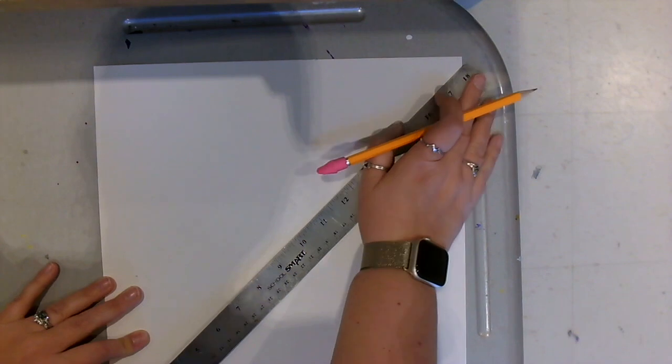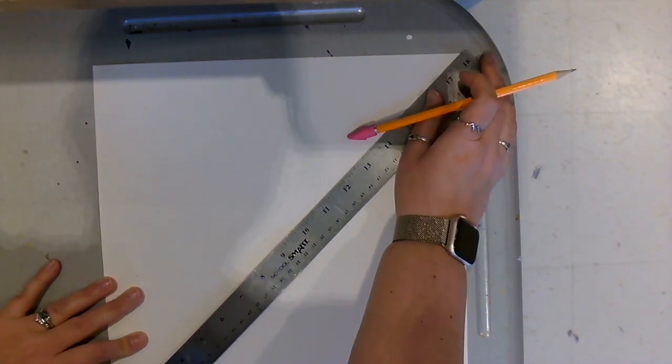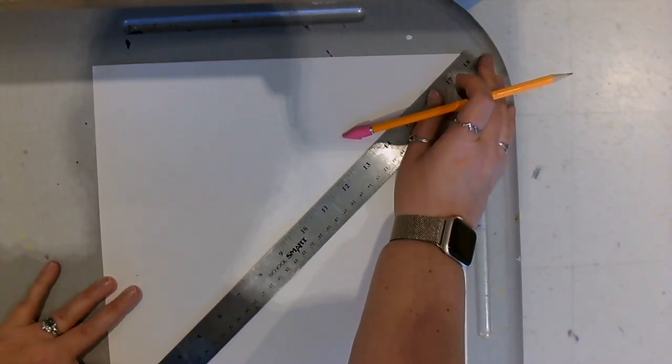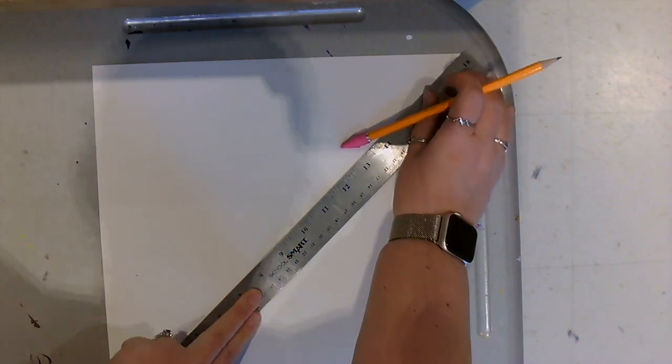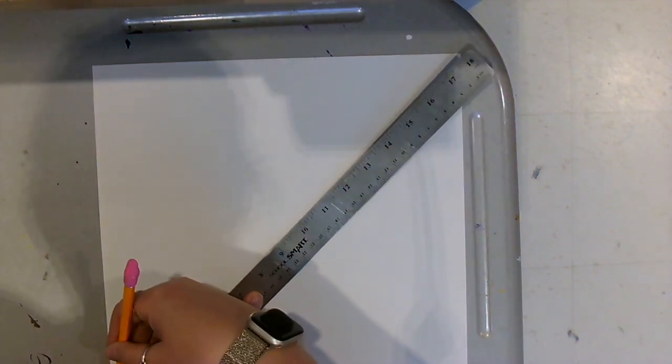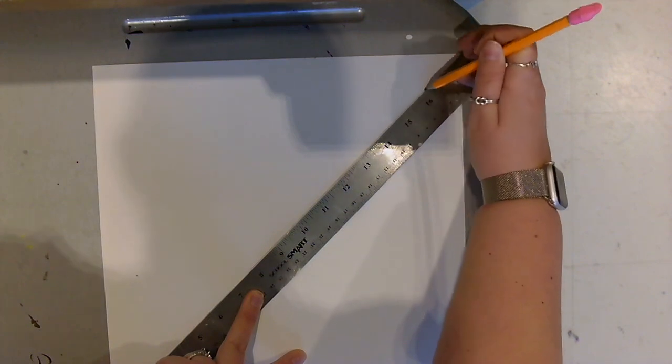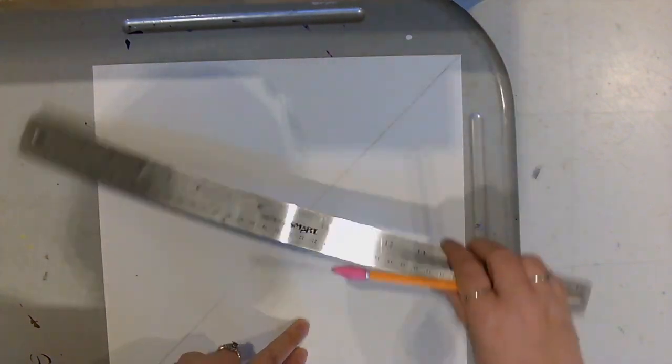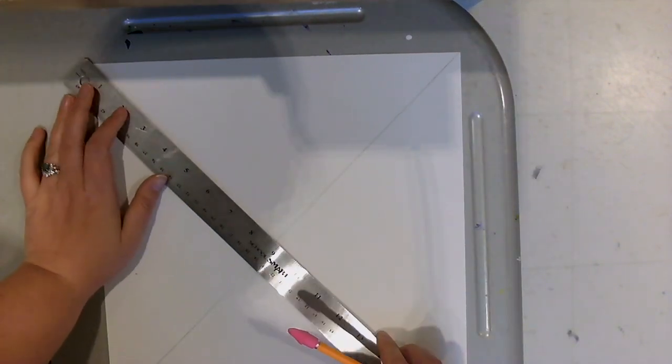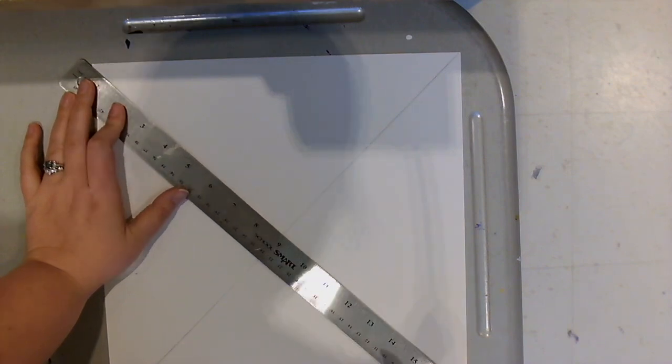We're going to start off by making an X on our paper. We're going to line up our ruler from corner to corner to make sure that it is in the center, our X. Make sure you're holding your ruler nice and steady and you can draw lightly because you might want to erase this later. Creating that X on your paper to find that center vanishing point.